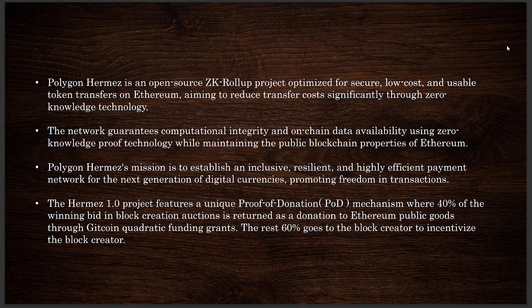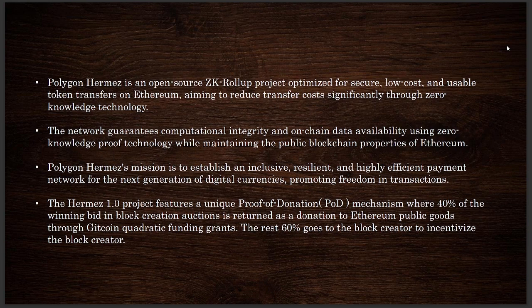In this case, for layer 1 blockchain Ethereum, this reduces the transfer cost significantly. Polygon Hermez uses zero knowledge technology for the rollup solution. We also have optimistic rollups, which we will go into detail about as well. This network guarantees computational integrity and on-chain data availability using zero knowledge proof technology.